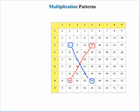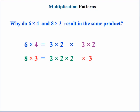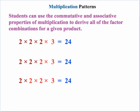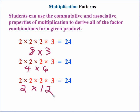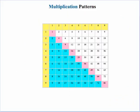Going back to why 6 times 4 and 8 times 3 result in the same product: the key is that when you break them down to all the factors, we have the same factors in both cases. Students can use the commutative and associative properties of multiplication to derive all factor combinations for any given product. Taking 24 as an example: 2 times 2 times 2 times 3 gives us all the prime factors. Grouping 2 times 2 times 2 gives 8 times 3; grouping 2 times 2 and 2 times 3 gives 4 times 6; and 2 times 2 times 3 gives 4 times... 4 times 3 is 12. Changing the order gives us 3 times 8, 6 times 4, and 12 times 2.